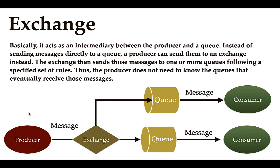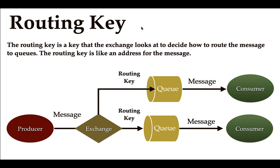The exchange uses some set of rules to route messages to the respective queue. A routing key is a key that the exchange uses to route a message to the respective queues — it's like an address for the message. In complex applications with multiple queues, when a producer sends a message to the exchange, the exchange uses the routing key to determine which queue to route it to.